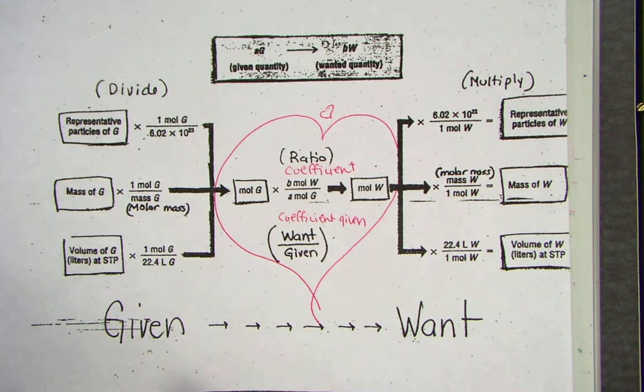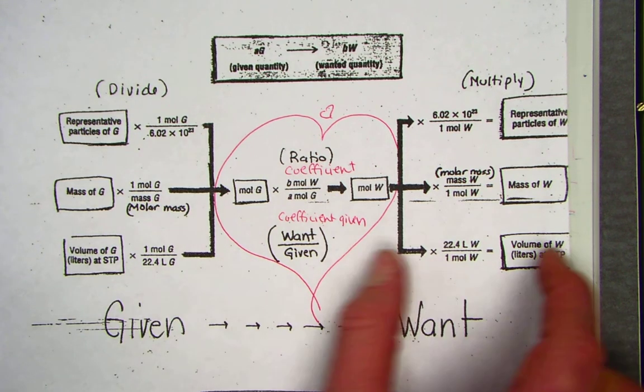The three steps of stoichiometry: divide, ratio, multiply.